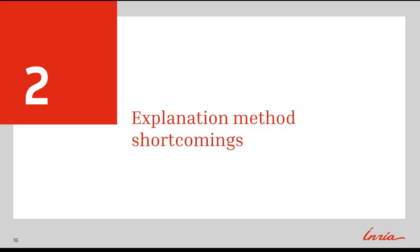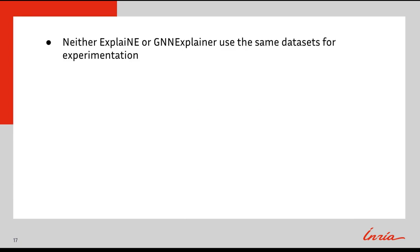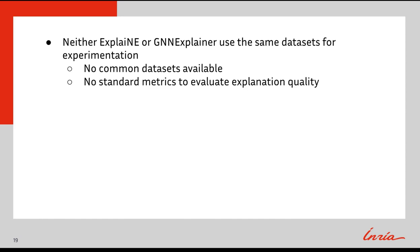Now we will address the shortcomings of these explanation methods. The weak point of Explaine and GNN Explainer is the empirical evaluation of explanation quality. Comparisons amongst these algorithms is difficult, as these papers do not use the same dataset or scoring metric. In fact, there are no common datasets available to measure explanation quality, and there are no standard scoring metrics to quantify performance.